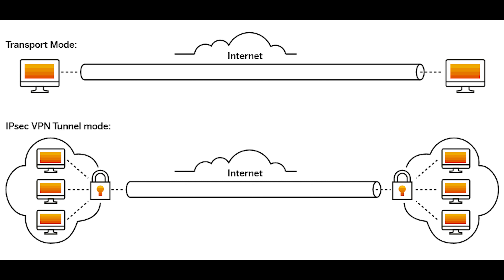Tunnel mode is the default mode, where the entire original IP packet is protected and encapsulated by the IPSec header and trailers, and then a new IP header is prepended to the packet specifying the IPSec endpoints as source and destination. Transport mode, on the other hand, only protects the payload of the original IP packet. The payload is encapsulated by the IPSec headers and trailers, the original IP headers remain intact, except the IP protocol field is changed to ESP and the original protocol value is saved in the IPSec trailer to be restored when the packet is decrypted.